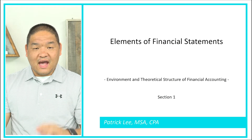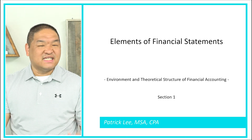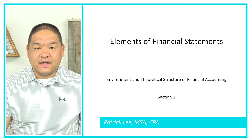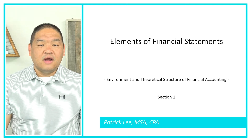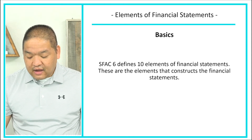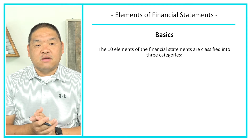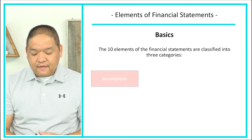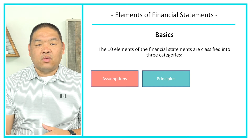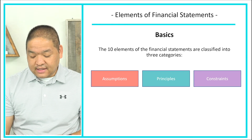In this lesson we are going to go over the elements to a financial statement — the overall look of the financial statement and some of the assumptions and principles we need to abide by as we prepare these financial statements. SFAC 6 defines 10 elements of financial statements. These 10 elements can be categorized into three categories: four assumptions, four principles, and two constraints.